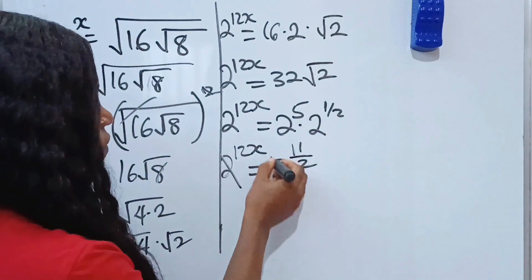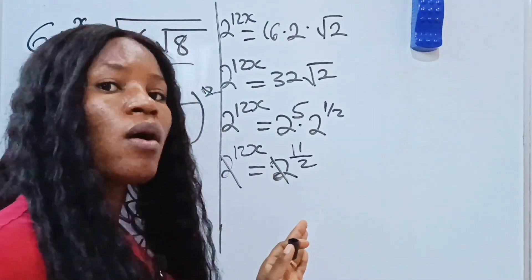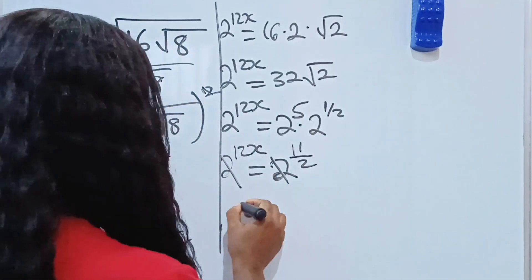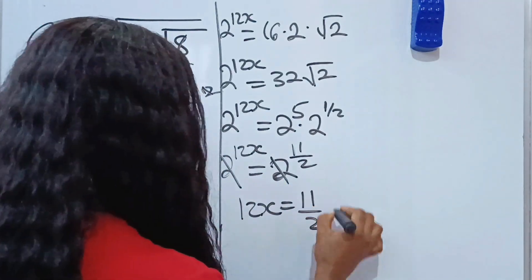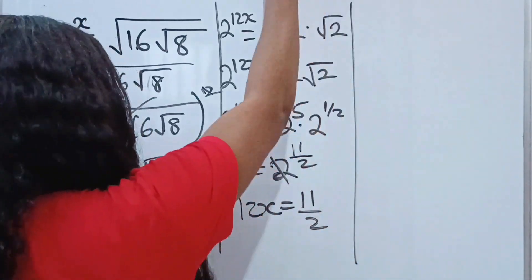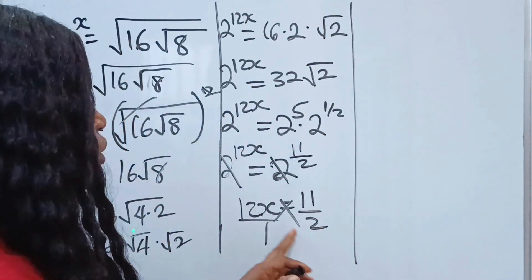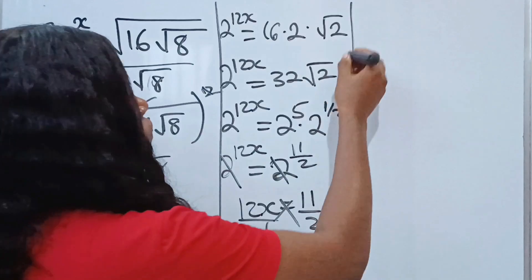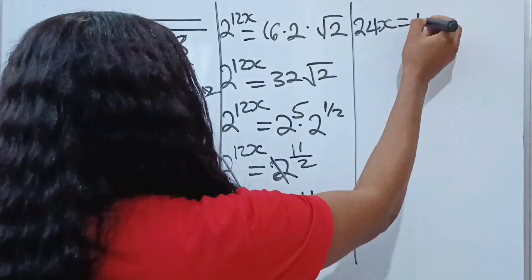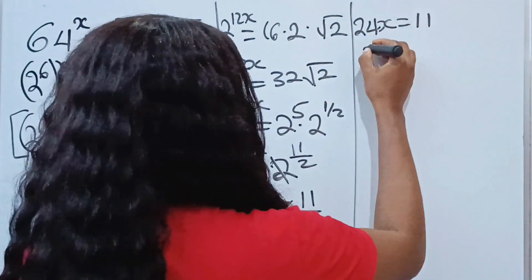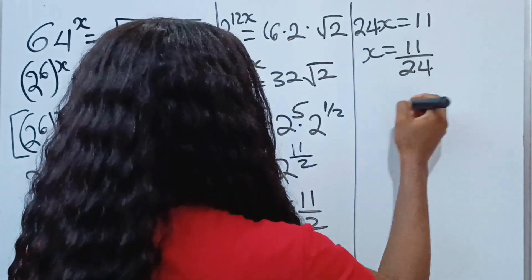Now, because we have the same base, we are going to ignore the base and equate the powers. So we will have 12x is equal to 11 over 2. Now we are going to cross multiply. If we do that, we have 2 times 12x gives us 24x, equal to 11. Therefore x is equal to 11 over 24.